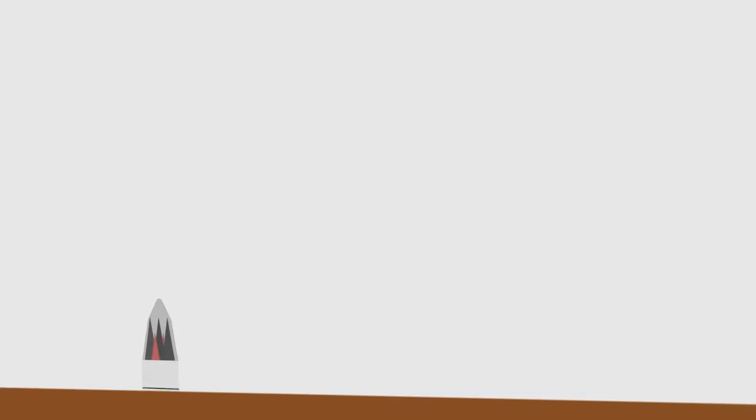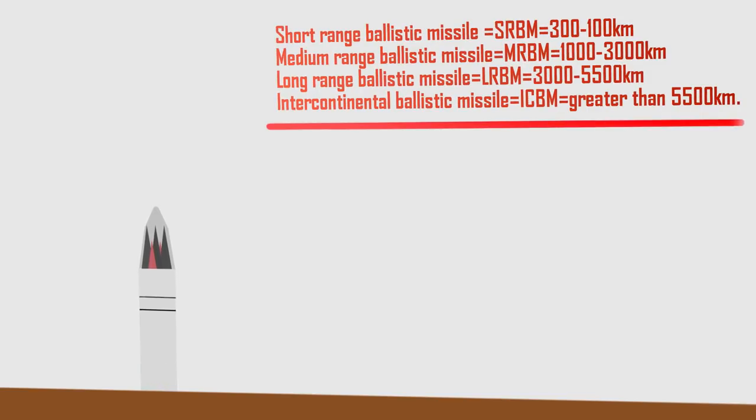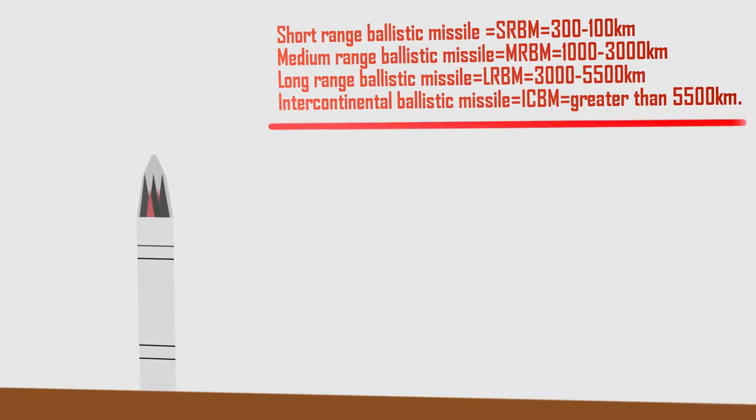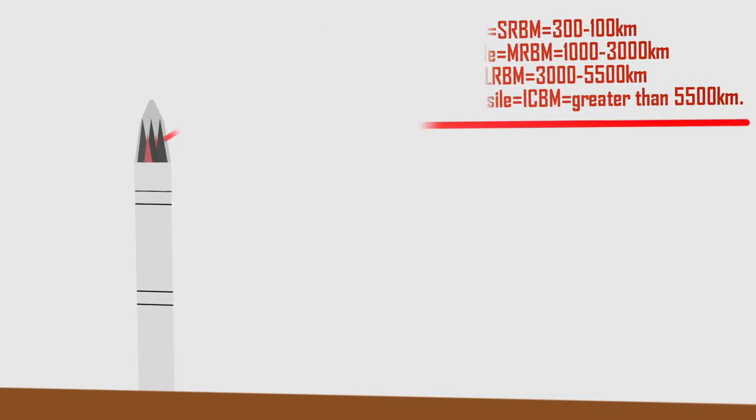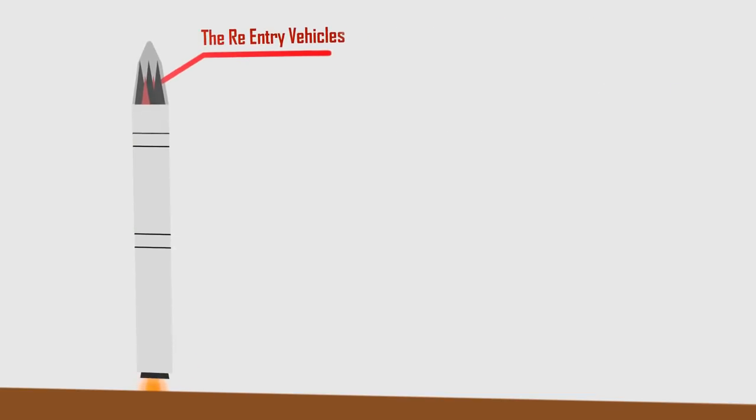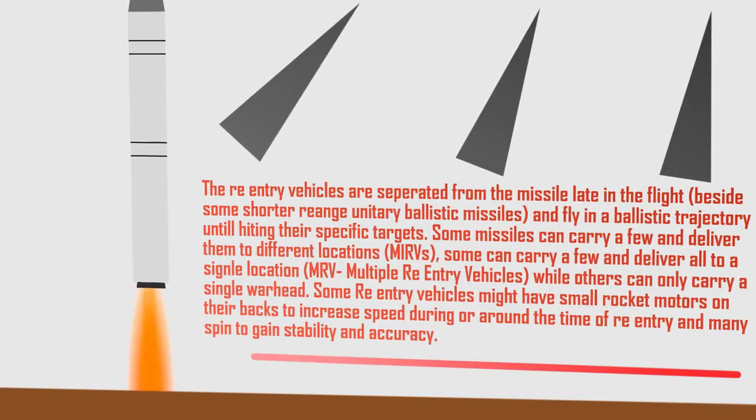The ballistic missile is launched. Here, it is an advanced medium range ballistic missile with MIRVs or multiple independent re-entry vehicles, meaning that the ballistic missile has a range of 1,000 to 3,000 kilometers and there are multiple warheads on the missile, each can strike a different target.